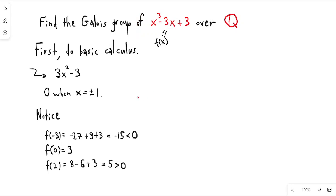I have my interval. I know that the only critical points are plus and minus 1, and I know that the polynomial is greater than 0 here, greater than 0 here, less than 0 here.